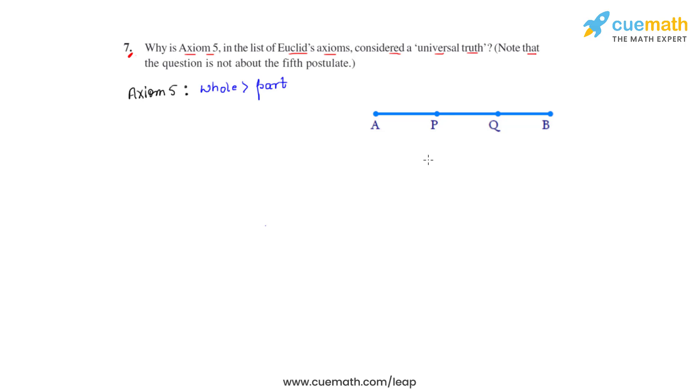Here AB is a whole, whereas AP, PQ, and QB are its three parts. What we can write from this is that AB equals AP plus PQ plus QB.